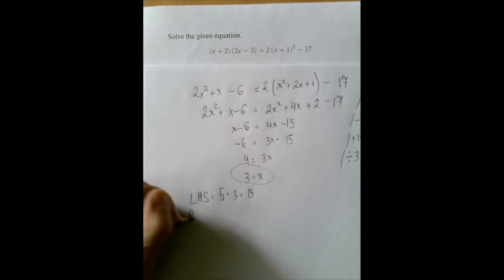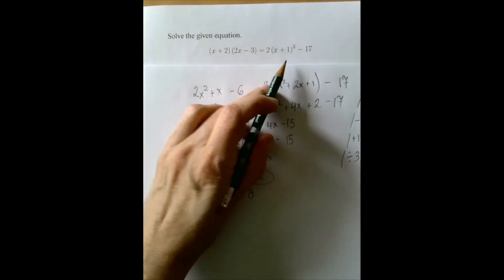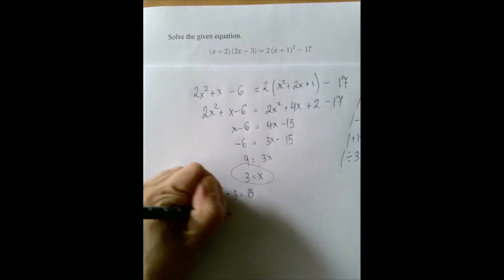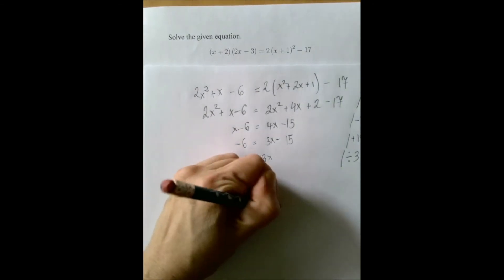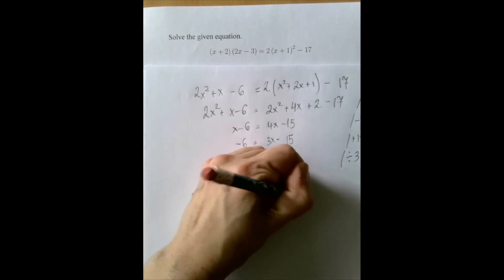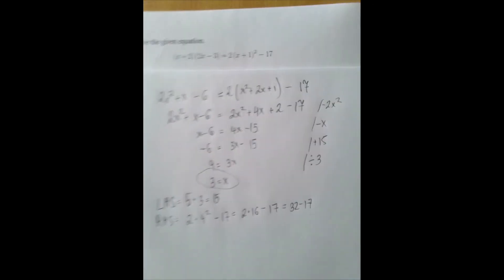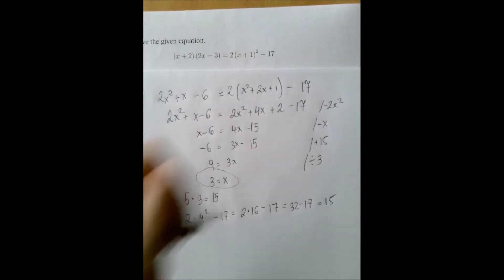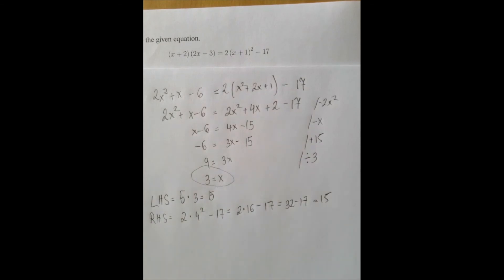And the right-hand side is 2 times 3 plus 1 is 4, 4 squared minus 17, that's 2 times 16 minus 17, that's 32 minus 17, which is 15. So, when x is 3, both sides are 15, which means that our solution, x equals 3, is correct.